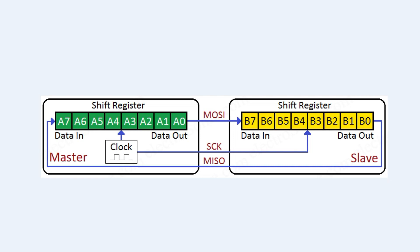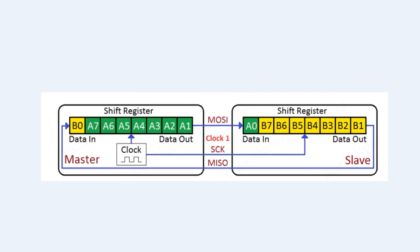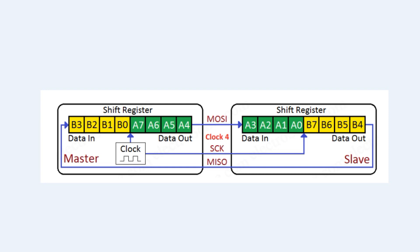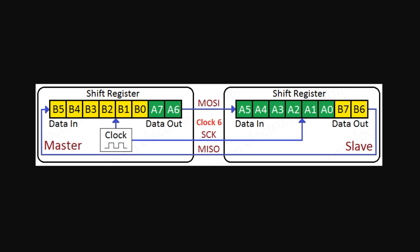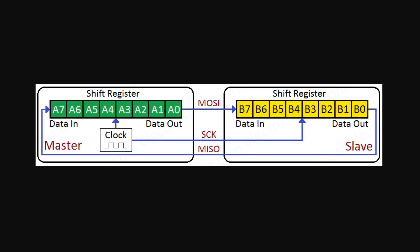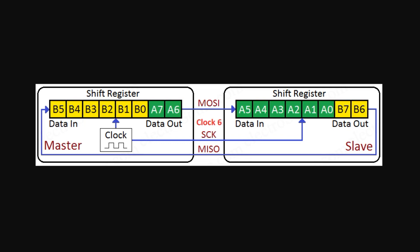Here's the status of our shift registers on the master and slave before a data transfer. After 1 clock pulse, we have shifted 1 bit over to the slave register, and the bit pushed out is now in the master register. After 4 clock pulses, 4 bits have been shifted from master to slave and 4 bits from the slave have come back into the master register. Here's an active diagram showing the 8 bits of the master register being clocked into the slave register — after 8 clock pulses, we have moved the full byte from the master to the slave.